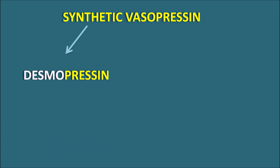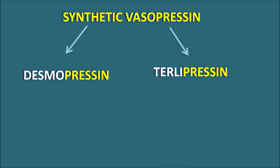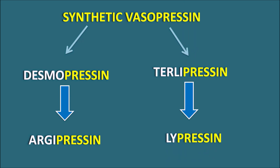What are the synthetic vasopressin analogs? We have mainly two types: one is desmopressin and the second is terlipressin. Desmopressin is an analog of argipressin, meaning it has arginine at the eighth position, whereas terlipressin is an analog of lypressin, meaning it has lysine at the eighth position.